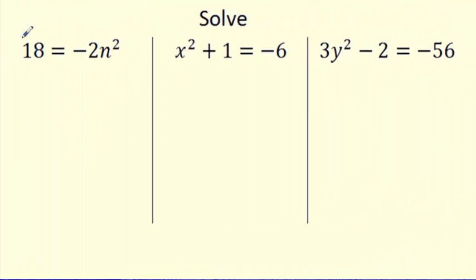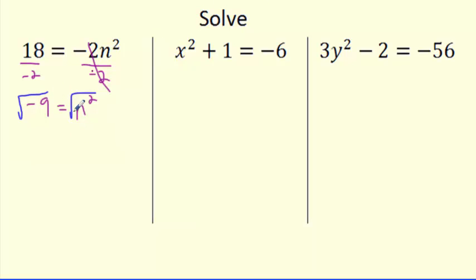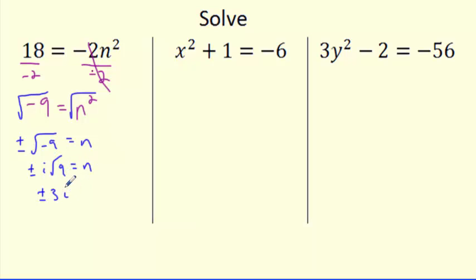Now let's solve some equations with imaginary numbers. For negative 2n squared equals 18: divide both sides by negative 2 to get n squared equals negative 9. Square rooting both sides — as soon as you introduce a square root, it becomes plus or minus. So you get plus or minus the square root of negative 9. Take the i out: the square root of 9 is 3, so the answer is n equals plus or minus 3i. That's an imaginary number.